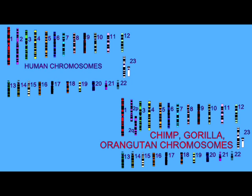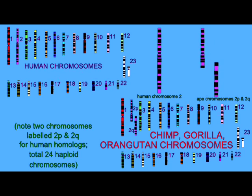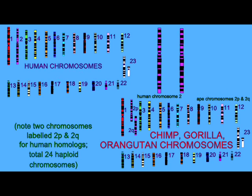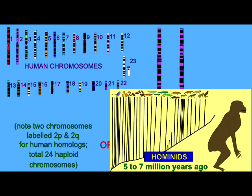For example, there are two smaller ape chromosomes which at some point fused to form human chromosome 2. So at some point in the hominid lineage, some members had 46 chromosomes, which would have made it more difficult to reproduce and produce viable offspring with other groups which had 48 chromosomes.